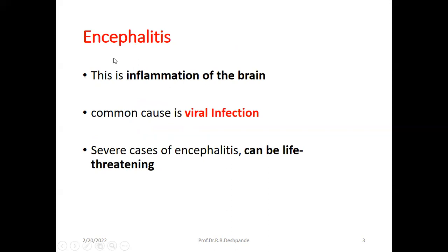What is encephalitis? Whenever there is the suffix '-itis', that indicates inflammation. Simple examples: tonsillitis — inflammation of tonsils; appendicitis — inflammation of appendix; bronchitis — inflammation of the bronchial tree. So encephalitis is inflammation of the brain.